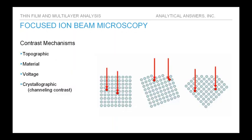I'd like to spend a couple minutes on the contrast mechanisms in focused ion beam microscopy. The first is topographic contrast, where changes in surface topography result in variations in secondary electron intensity. There's also material contrast, referring to various chemical species present in the surface having different secondary electron yields — so as you step from one material to the next, your secondary electron contrast will change.